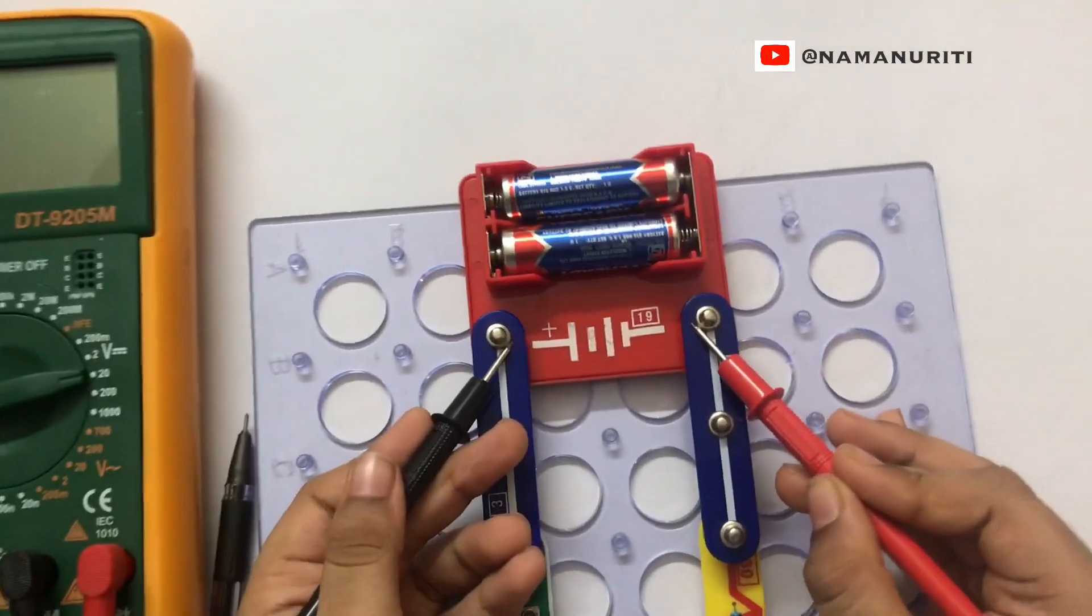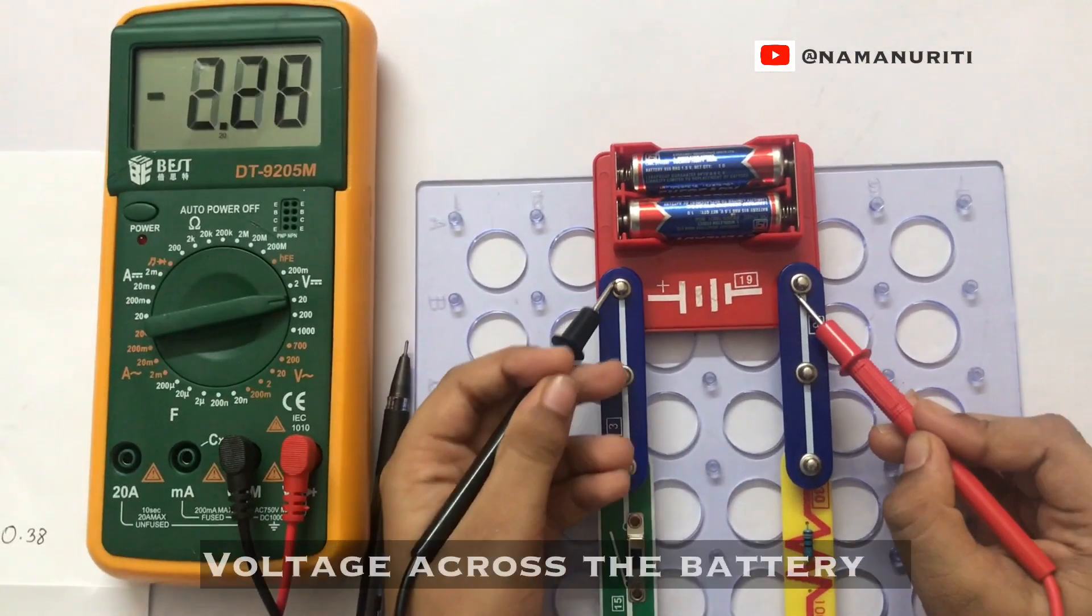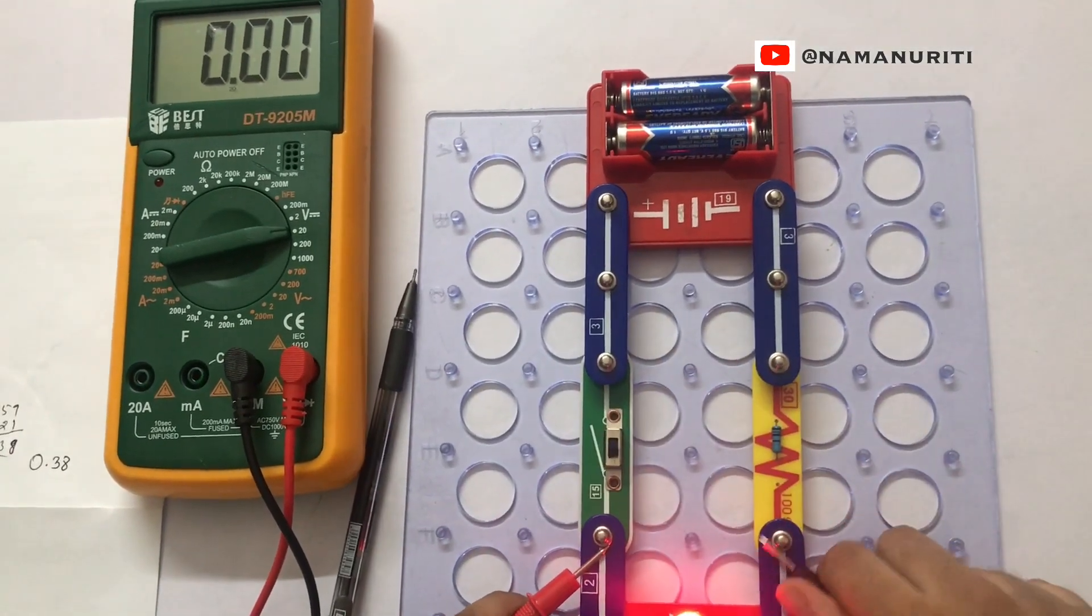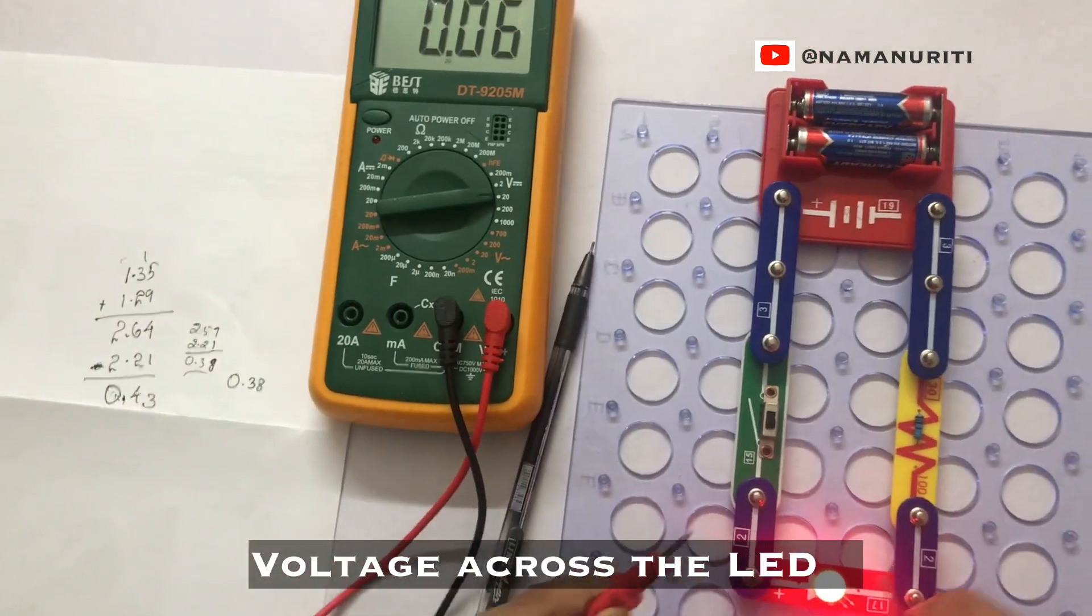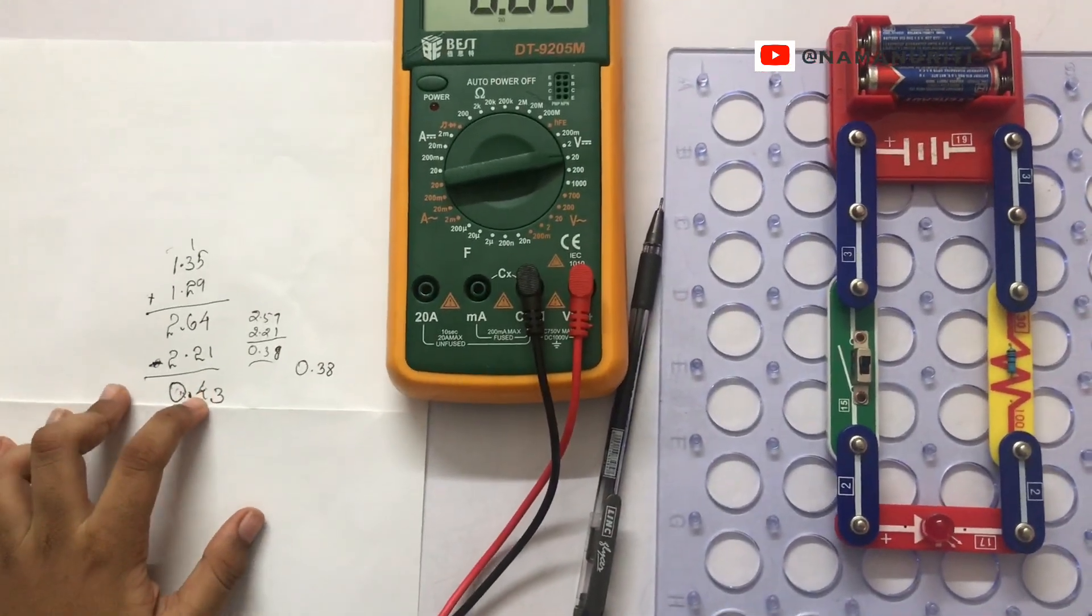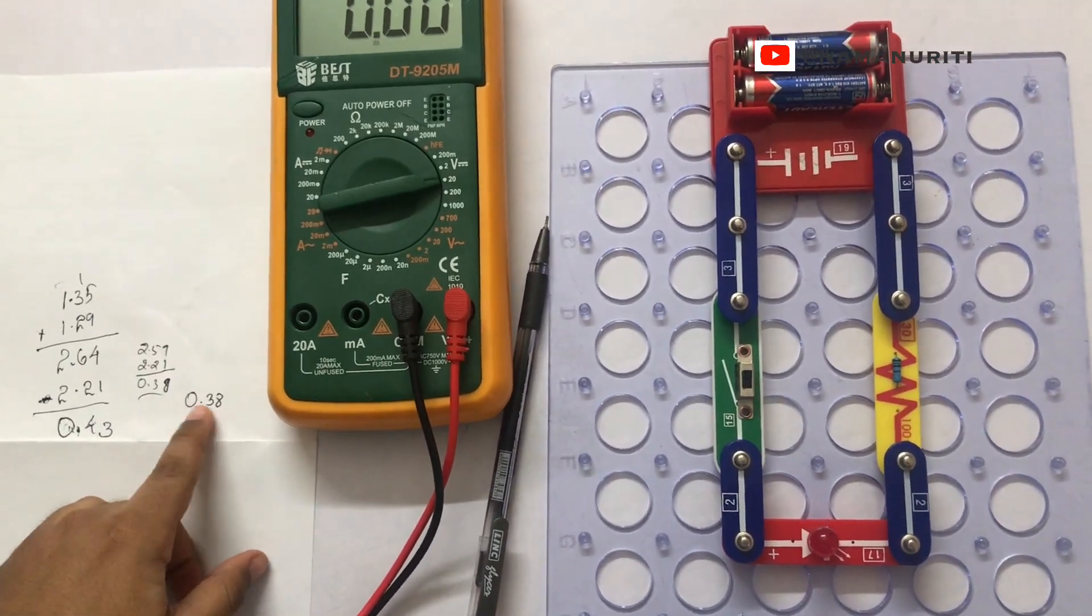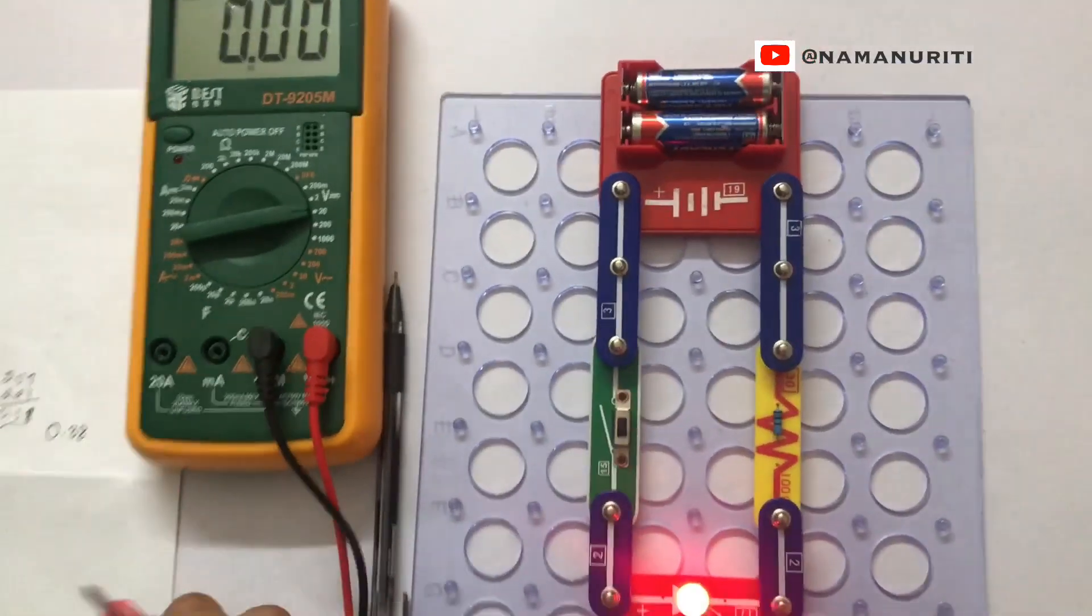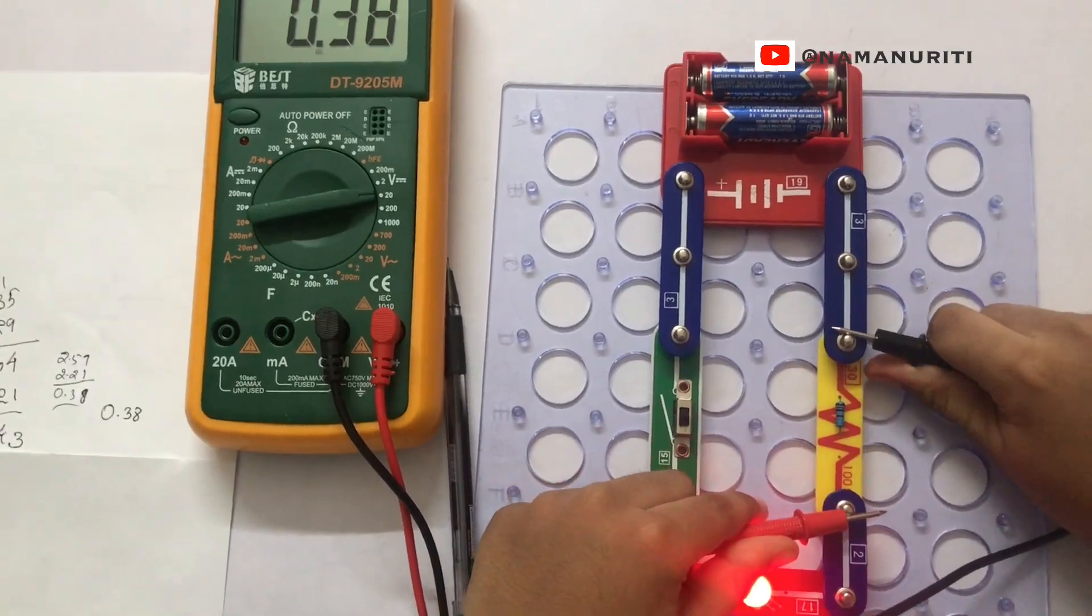This is the battery voltage. 2.22. Okay. So we get 0.43 which is almost nearby 0.38. It is 0.38.